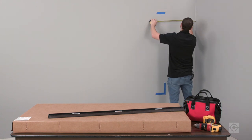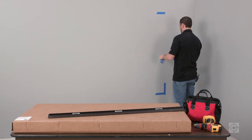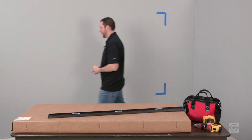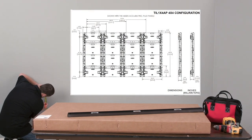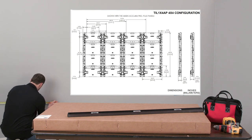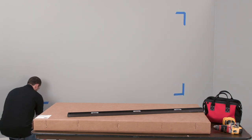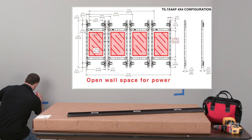Once the layout of the video wall has been determined using your site installation drawing, reference the instruction manual provided with one of the Chief mounts. The manual provides layout drawings with outer dimensions for common video wall configurations.